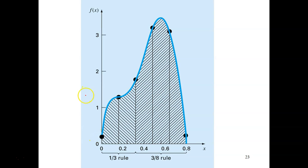This is how it looks visually. The blue curve is the function. The first two segments use three points — the odd points — so we use the one-third rule. For the remaining segments, we use the 3/8 rule.